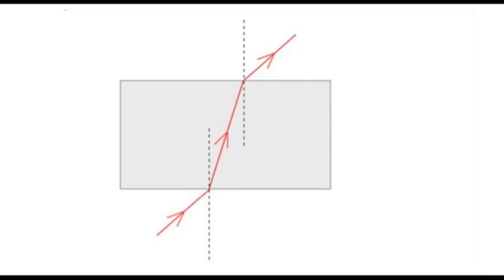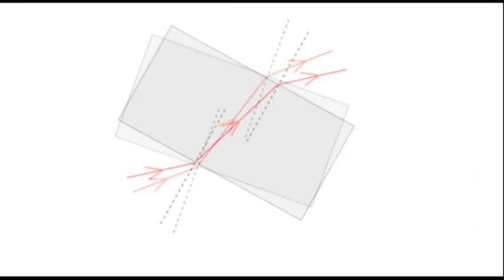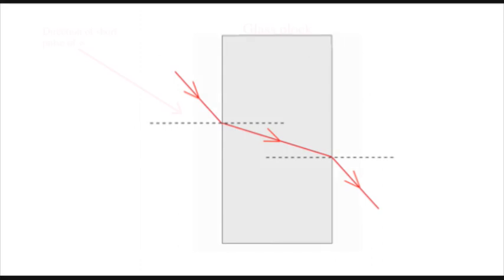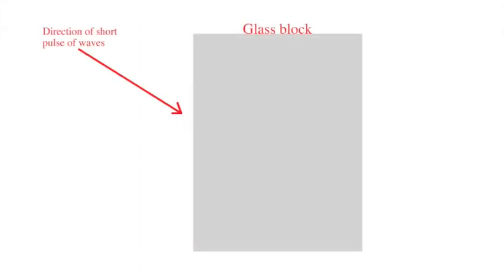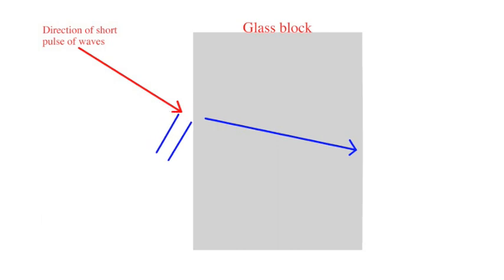Going back to the diagram of the light traveling through the block, we'll turn this through 90 degrees and then follow the path of two waves of light going through. The waves travel quickly through the air and then as they reach the dense material of the block, they slow down.